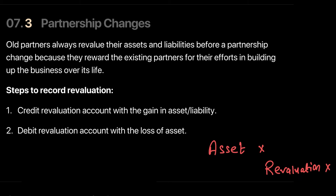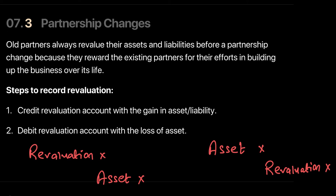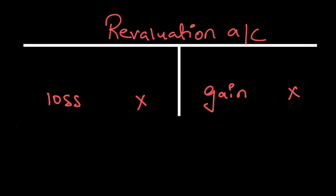Similarly, if there is a loss, we should credit the asset account because the value of the asset has gone down, and we transfer this loss to the revaluation account. Your revaluation account should look something like this: all gains are transferred to the credit side, and all losses are transferred to the debit side of the revaluation account.